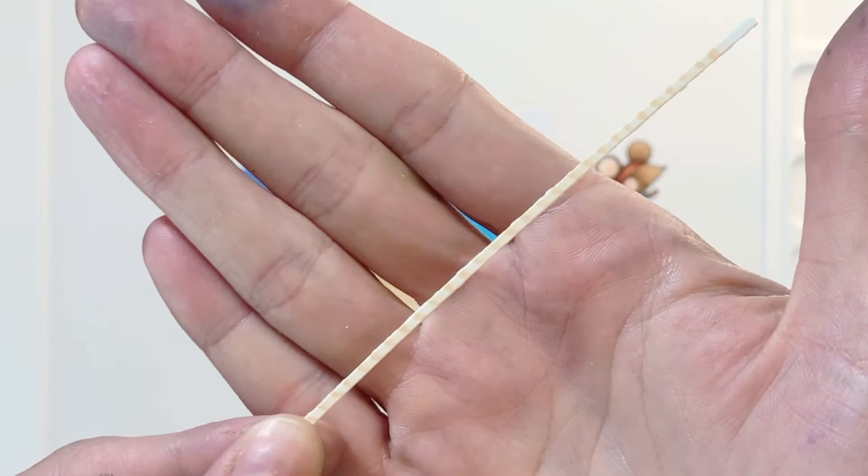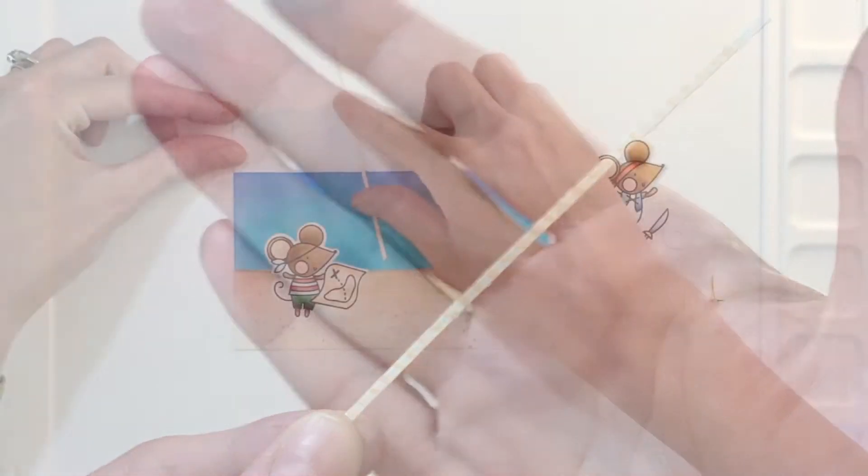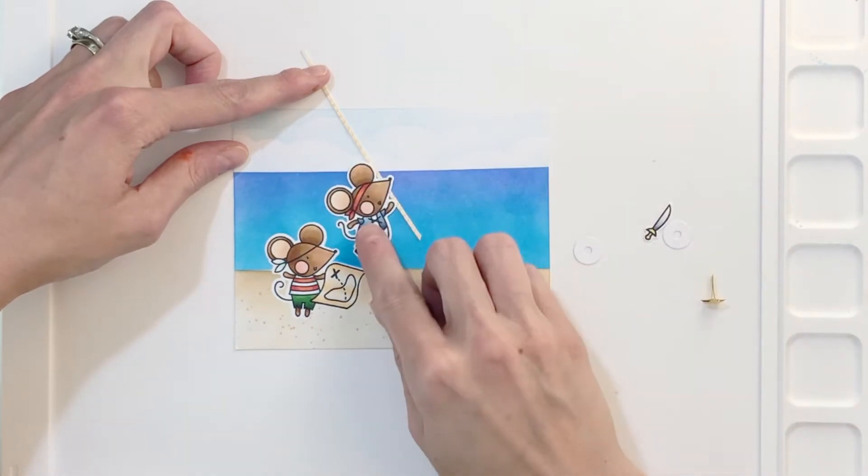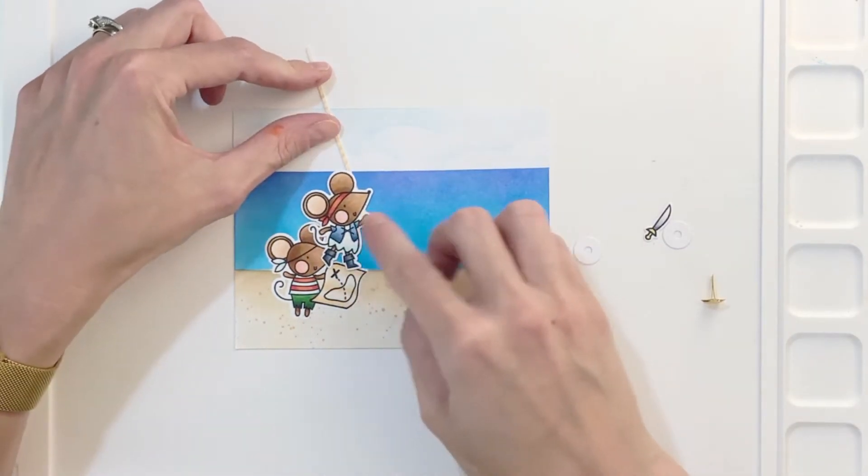Then you'll need a piece of cardstock to connect the mouse to those donut pieces. I created my own rope here, just cut the cardstock very thin and then colored it with Copics to make it look like a rope.